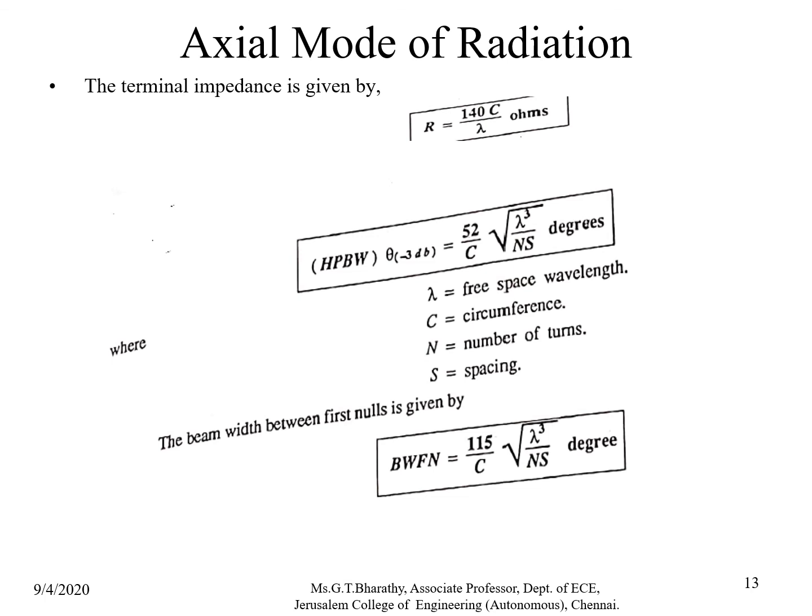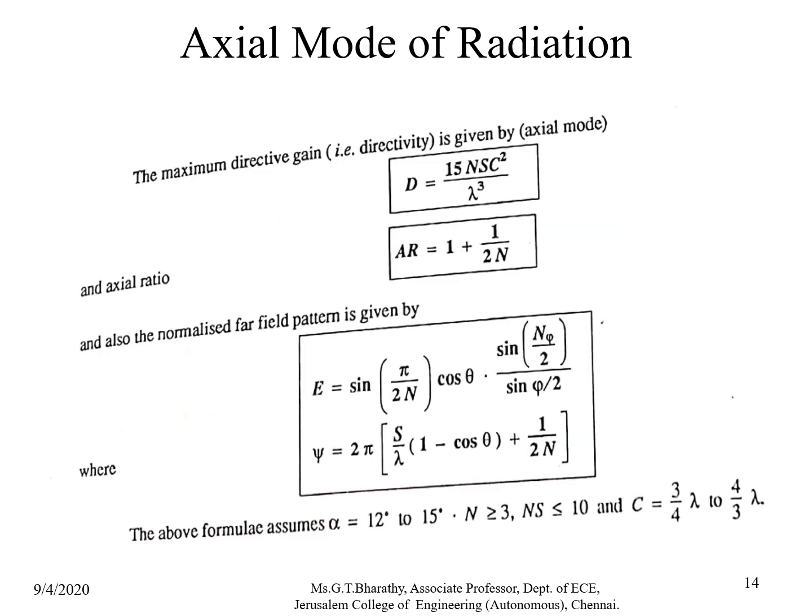In the HPBW formula, λ is the free-space wavelength, C is the circumference, N is the number of turns, and S is the turn spacing. The beamwidth between first nulls (BWFN) = 115 / (C √(NS/λ³)) degrees. The maximum directivity in axial mode is D = 15N(C²/λ³). The normalized far-field pattern is E = sin(π/2N) × cosθ × sin(Nψ/2) / sin(ψ/2), where ψ = 2πS/λ × (1 − cosθ) + 1/(2N). Typical parameters: pitch angle α = 12°–15°, N > 3, NS < 10λ, and C ranges from (3/4)λ to (4/3)λ.